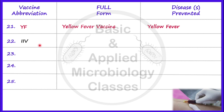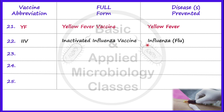Now let's take the next vaccine, that is IIV. IIV stands for Inactivated Influenza Vaccine, and as its name indicates, it prevents influenza, which is caused by the influenza virus. The route of administration for this vaccine can be either intramuscular or subcutaneous.